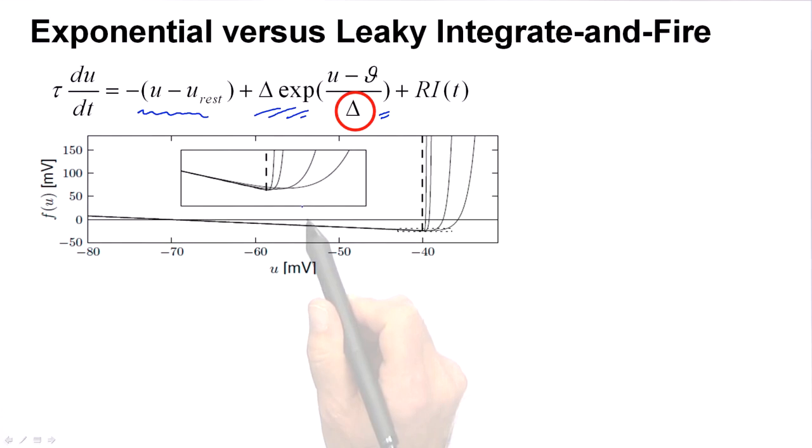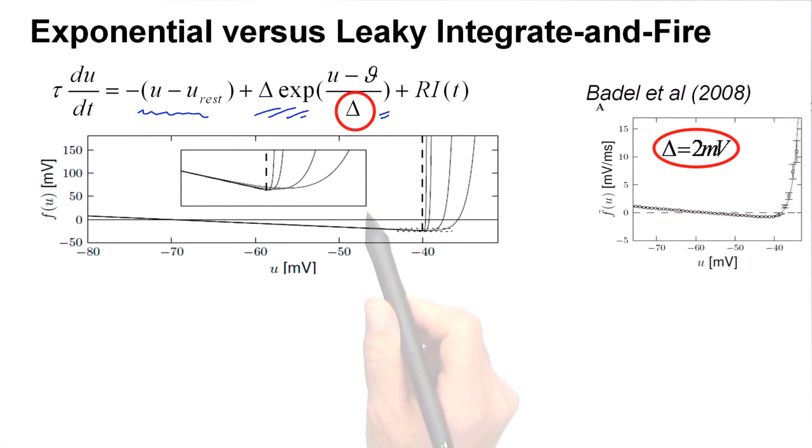Now this is a parameter of the model. If you measure the curve, the nonlinearity of the exponential integrate-and-fire and you fit with this linear plus exponential term, you find a delta in the range of two millivolts. That's not a lot. That means it's really a sharp transition up here.